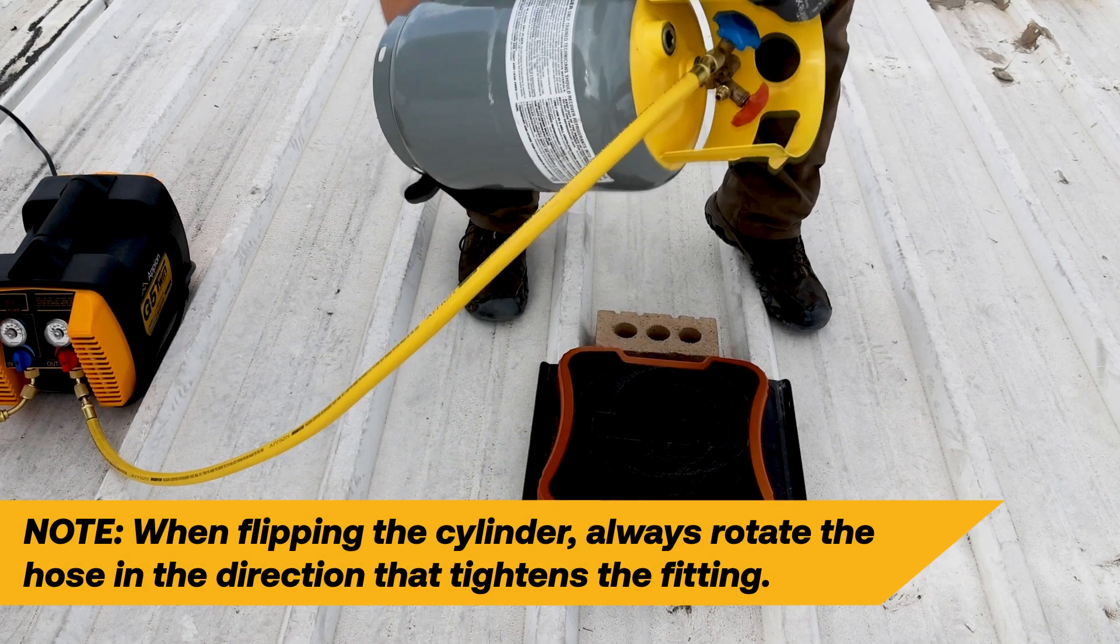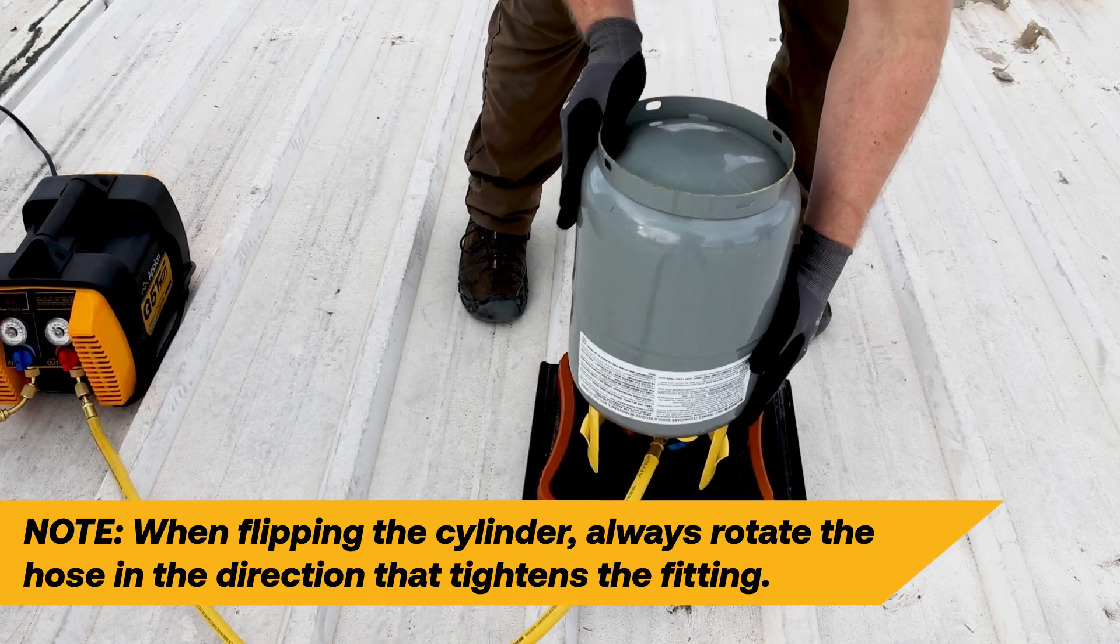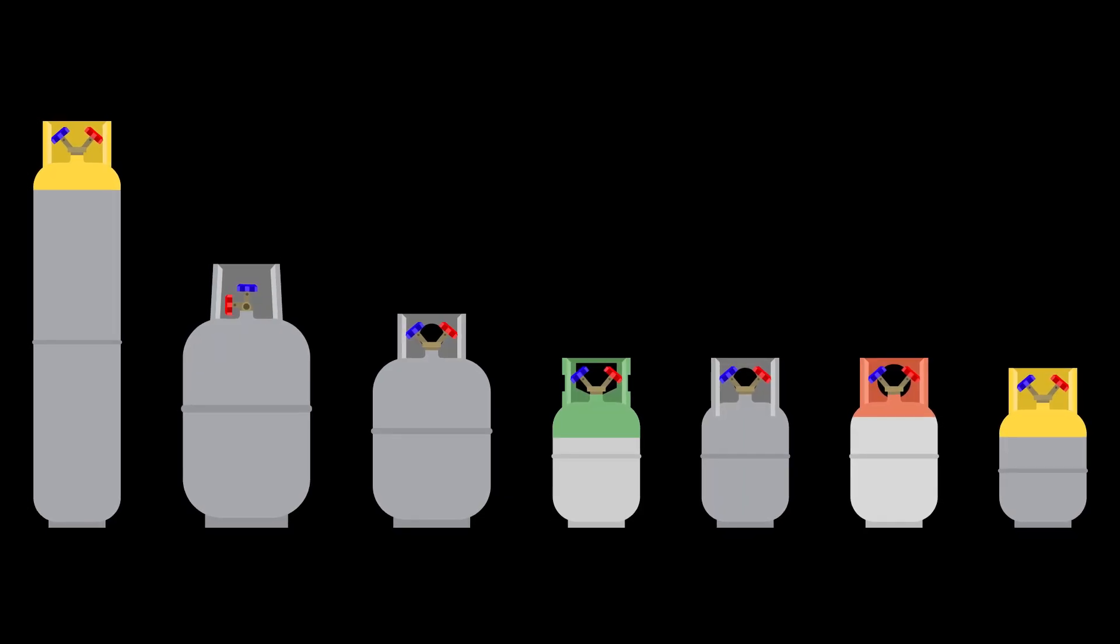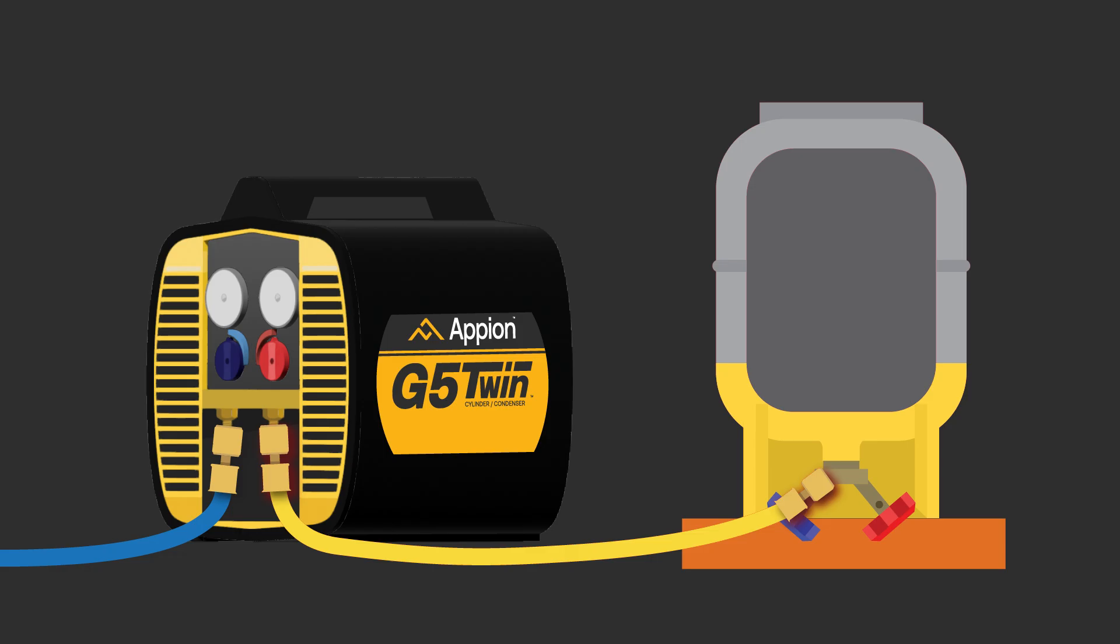One of the easiest add-on techniques is flipping the recovery cylinder. While this technique can only sometimes be used due to limitations with recovery cylinder design and weight, it is often a great technique to utilize when applicable. Flipping the cylinder allows liquid refrigerant to fill from the bottom up but through the less restrictive vapor port.